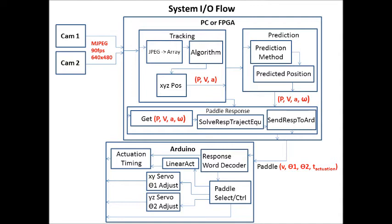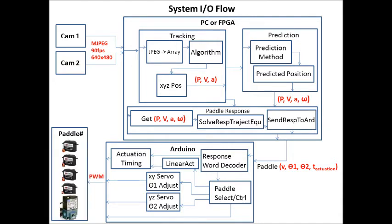Once it knows which paddle it needs to select, it can then send the individual servo systems the different angles, and it can send the linear actuator the time to actuate and the velocity at which to actuate at. Then the information is sent, and the paddle will respond.